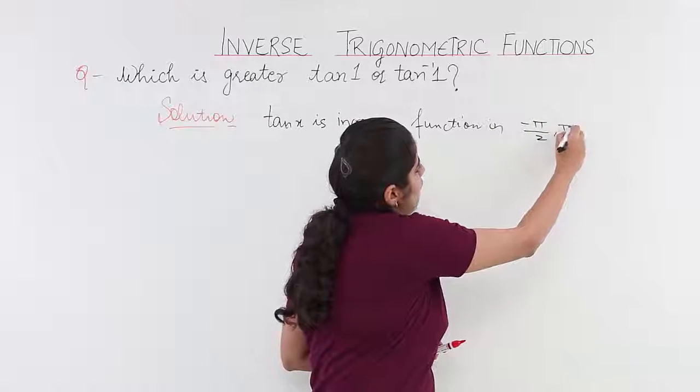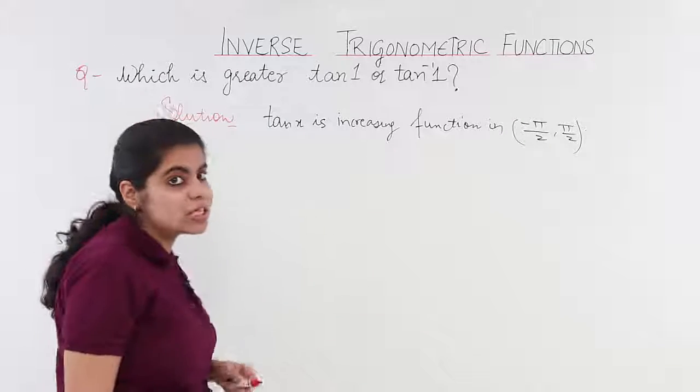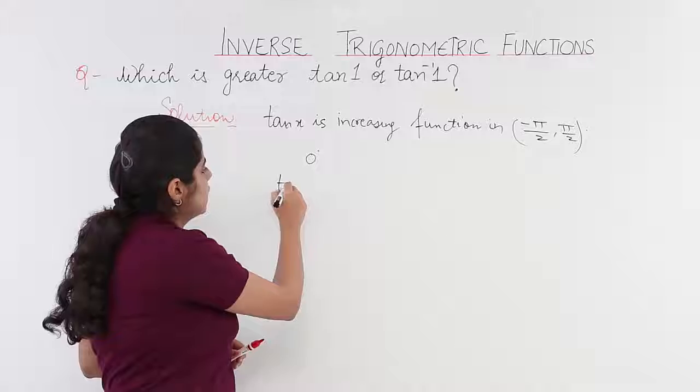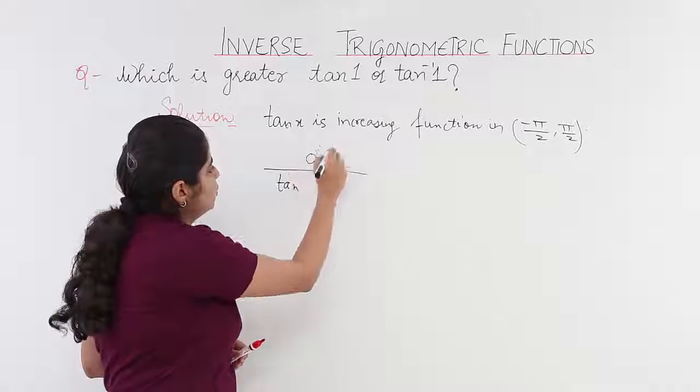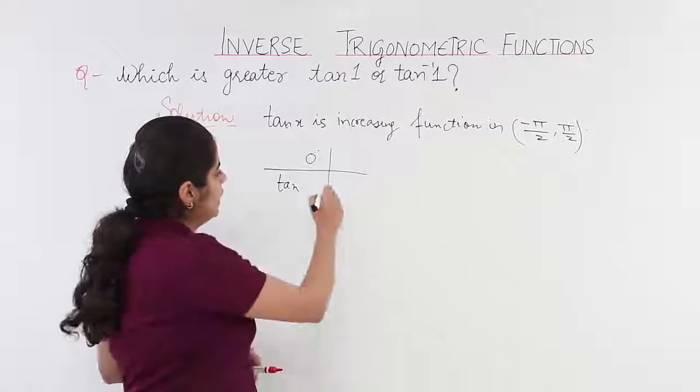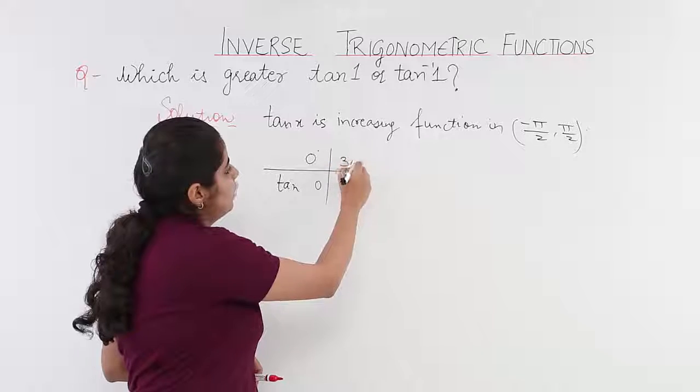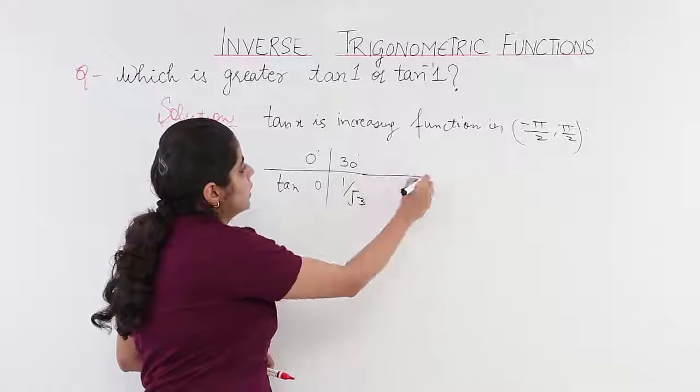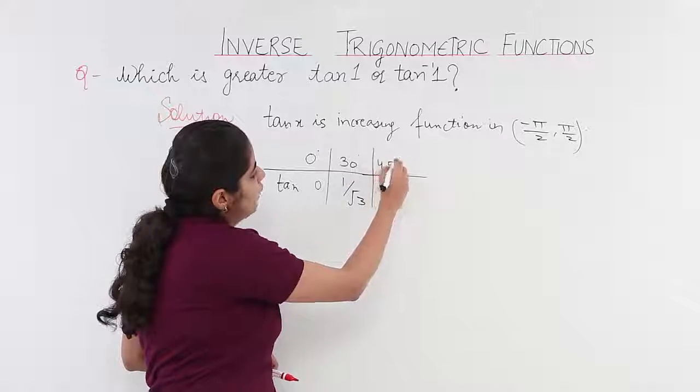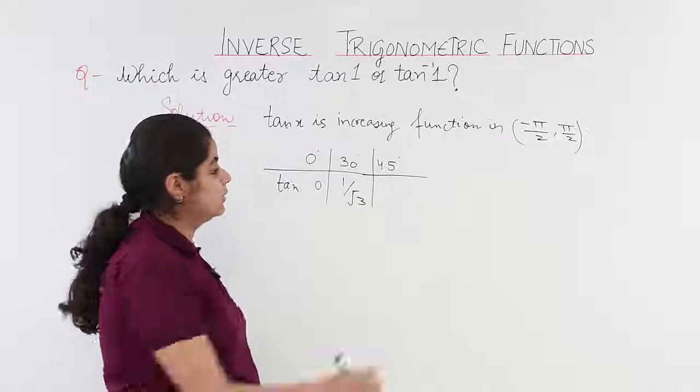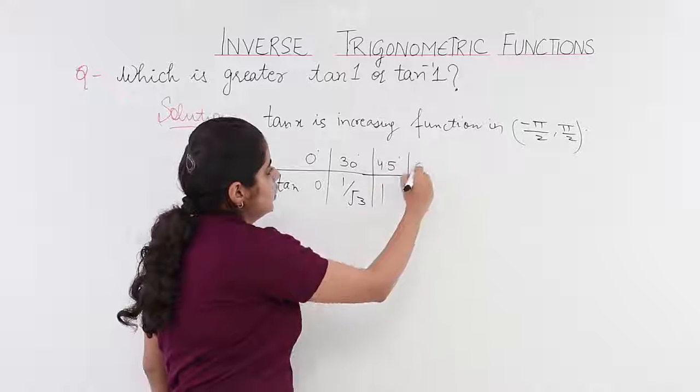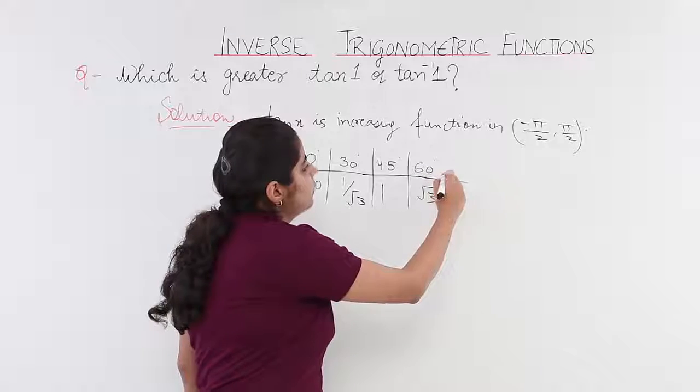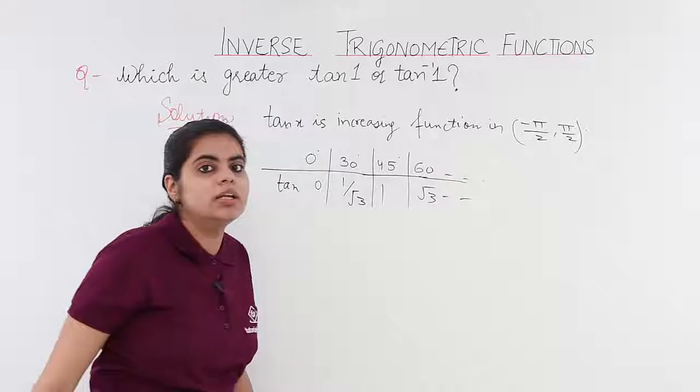How do I know that? I know this because I know the values. I know what is the value of tan 0 degrees? It is 0. What is the value of tan 30 degrees? It is 1 by root 3. Then, what is the value of tan 45 degrees? It is 1. What is the value of tan 60 degrees? It is root 3. And, moving further, the values keep on increasing.